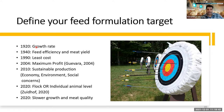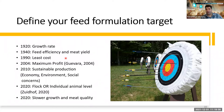Let's define our feed formulation targets. Chronologically: in 1920 the target was to increase growth rate; then the focus shifted to feed efficiency and meat yield; in 1990 it was about formulating the least cost diet.